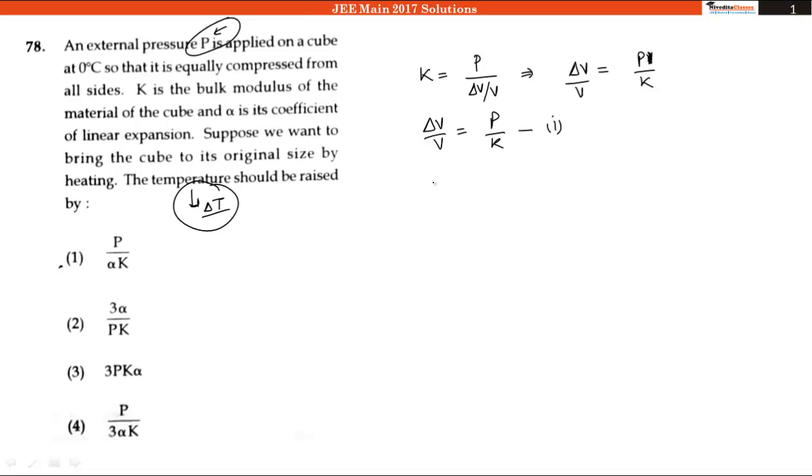In the second equation, the change in volume per unit volume equals 3α (the coefficient of volumetric expansion) multiplied by change in temperature ΔT. Therefore, ΔT = (ΔV/V)/(3α).